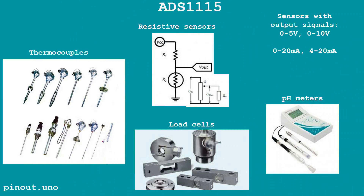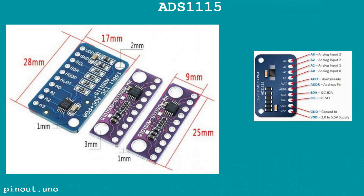It is ideal for measuring industrial analog sensors and supports sensors with current and voltage outputs, as well as resistive sensors. Thanks to the built-in amplifier, the ADS1115 can handle low-voltage sensors such as thermocouples, strain gauges, and pH meters. The multi-channel feature provides four input channels, differential mode support is important for applications like strain gauges, and the I2C interface saves microcontroller pins and simplifies connections.